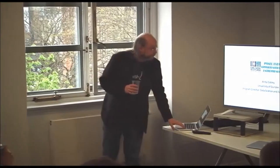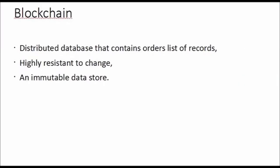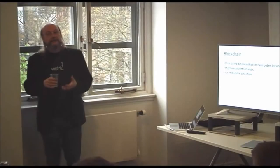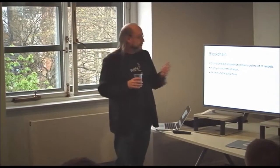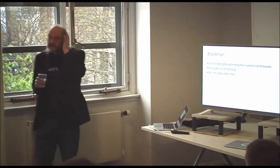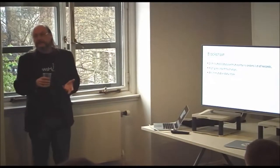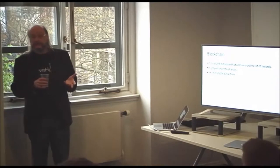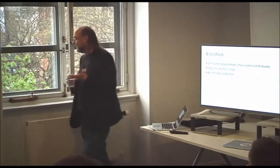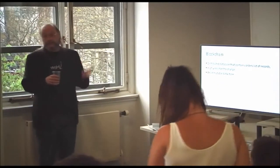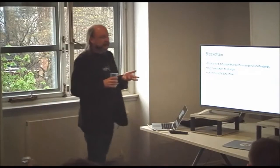So what is blockchain? I come from the database world, so this is the way I look at it. It's essentially a distributed database that contains an ordered list of records going right the way back to the start of the chain. What's really important is that it's highly resistant to change. Once something goes into this list, it's very difficult to change it. In the database world, we call this an immutable data store — the data in there can't be deleted.